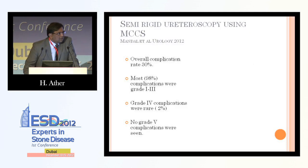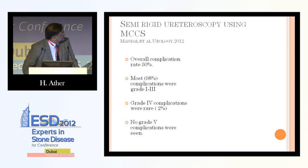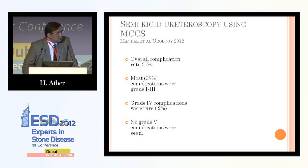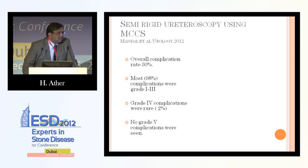Mandel et al. looked at semi-rigid ureteroscopy and classified complications based upon the modified Clavien system. In this recent report, the overall complication rate was 30%, which may sound high. But looking closely at the modified Clavien classification, 98% of them were grade 1 to 3, and there were hardly any grade 4 complications. So in the vast majority of patients, these complications were managed conservatively.